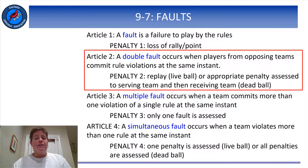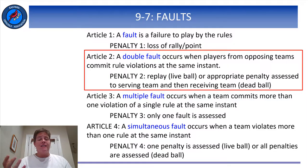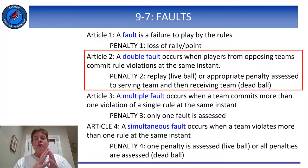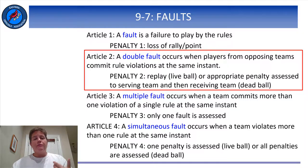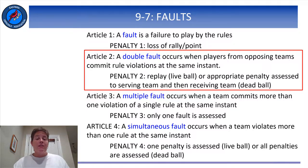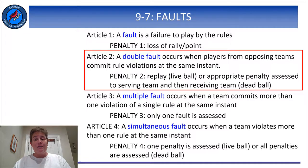If each team commits a fault at the same moment, that's called a double fault. One example might be that an attacker on Team A and a blocker on Team B both commit a net fault during play at the same instant. The referees should try to discern if one team committed the fault first, but if that can't be determined, or if the referees are certain that the faults happened at the same time, then the outcome is a replay.